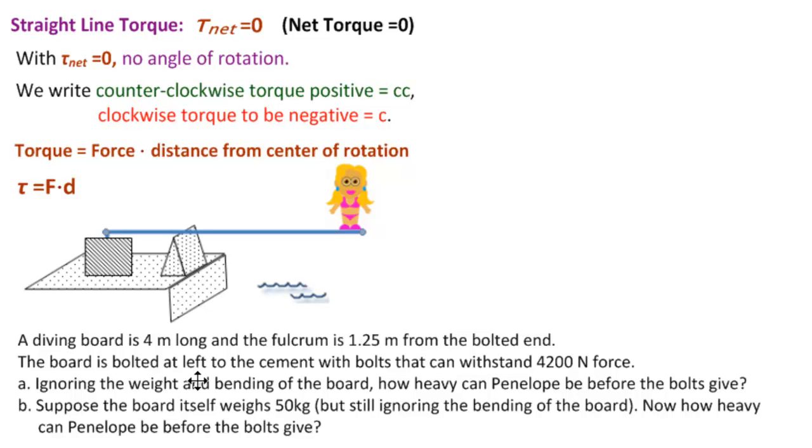The board is bolted at left to the cement with bolts that can withstand 4,200 newtons of force. Ignoring the weight and bending of the board, how heavy can Penelope be before the bolts give? So here's where the board is bolted. Here's the fulcrum. Here's where Penelope is. We want to know how heavy Penelope can be before this will go, before this end of the board will come undone.